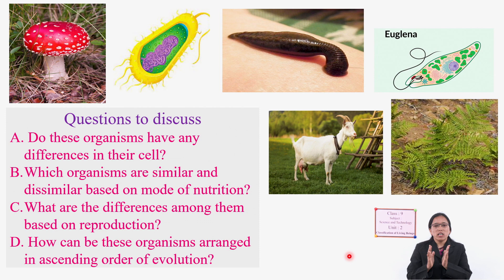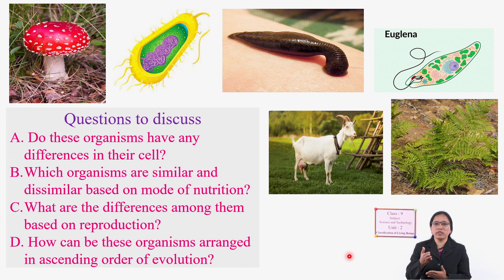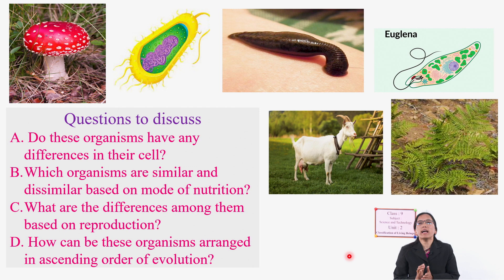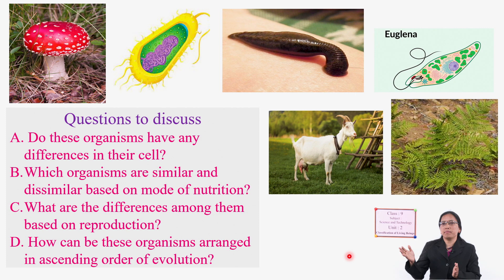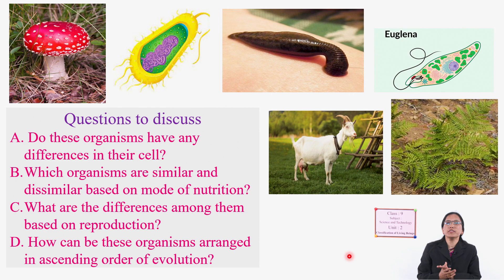Among leech and goat: leech is an invertebrate and goat is a vertebrate, so leech comes before goat. Among mushroom and fern plant, both have cell walls, but fern has chlorophyll while mushroom does not. So mushroom is arranged before fern as more primitive. In this way, the evolutionary order is: bacteria, euglena, mushroom, leech, fern plant, goat.